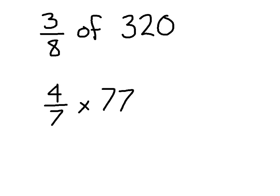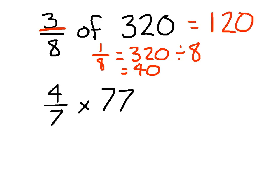So we start with the first one: 3/8 of 320. We know that 1/8 of 320 equals 320 divided by 8, and we know that that is 40. So therefore, 3/8 is going to be 3 times 40 equals 120.